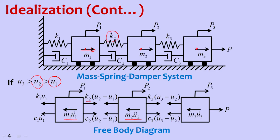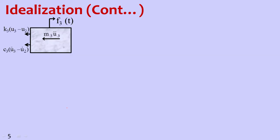We write the equation of equilibrium for each degree of freedom separately. For mass 3: M3·Ü3 + K3·(U3−U2) + C3·(U3̇−U2̇) = P3(t).